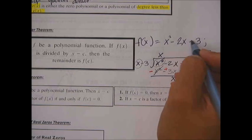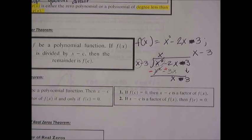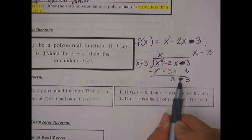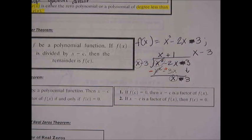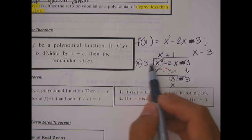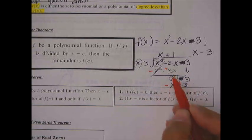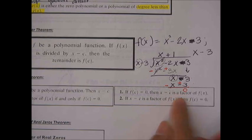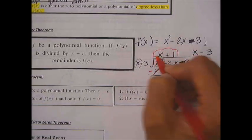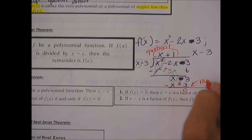With x - 3 divided by x - 3, the first term divided by the first term gives +1. Multiply: 1 times x is x and 1 times -3 is -3. Change signs, combine — both pairs cancel. The remainder is zero, so the quotient is x + 1 with no remainder.